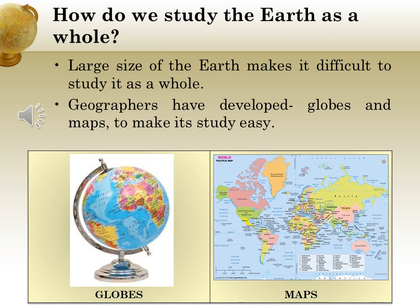Now, as the earth is bigger than us, how are we going to study about the earth? The large size of the earth makes it difficult to study it as a whole. So the geographers have developed different means of representing earth on a smaller scale, like globes and maps, to make study easy. A globe is a small model of the earth, and a map is a drawing of the earth's surface.